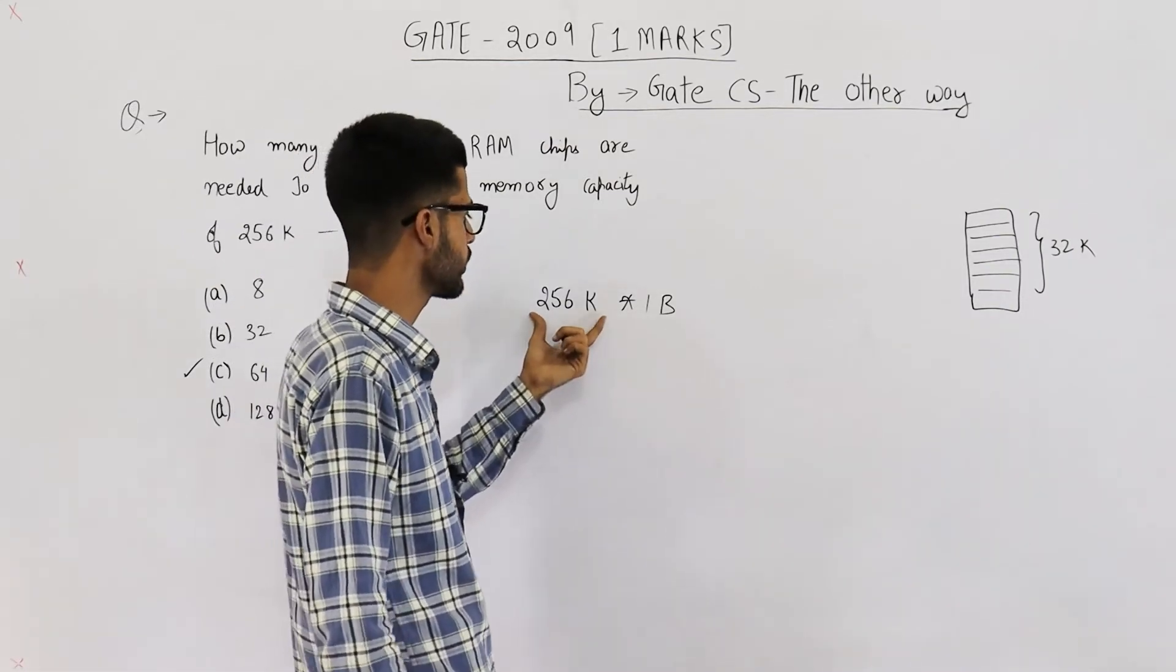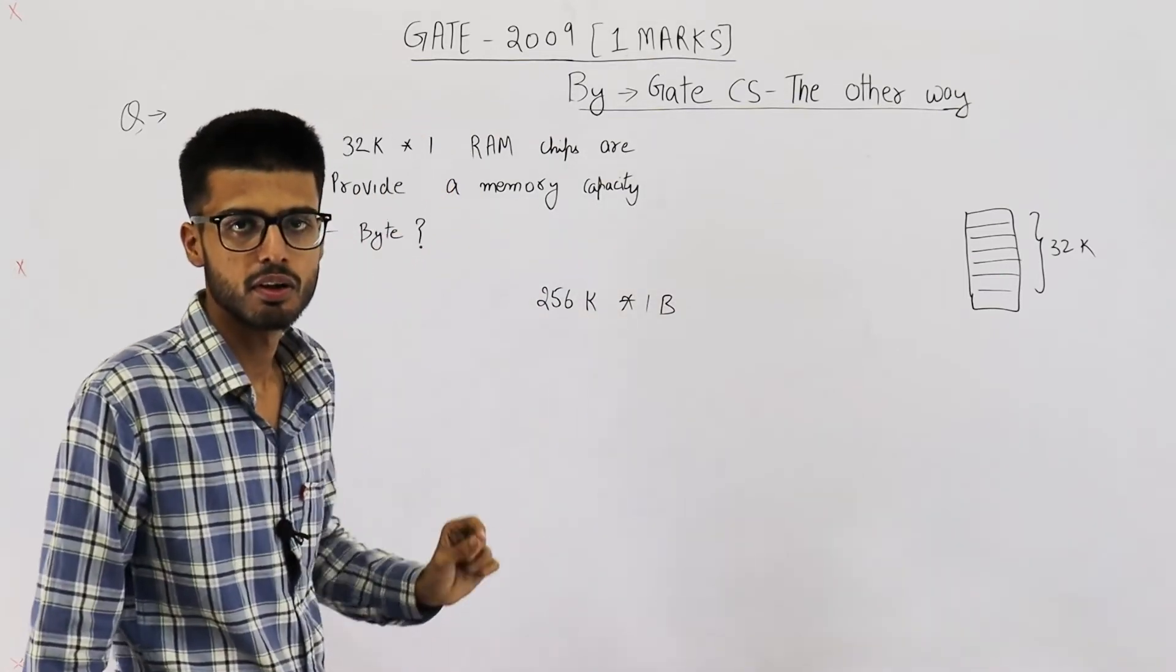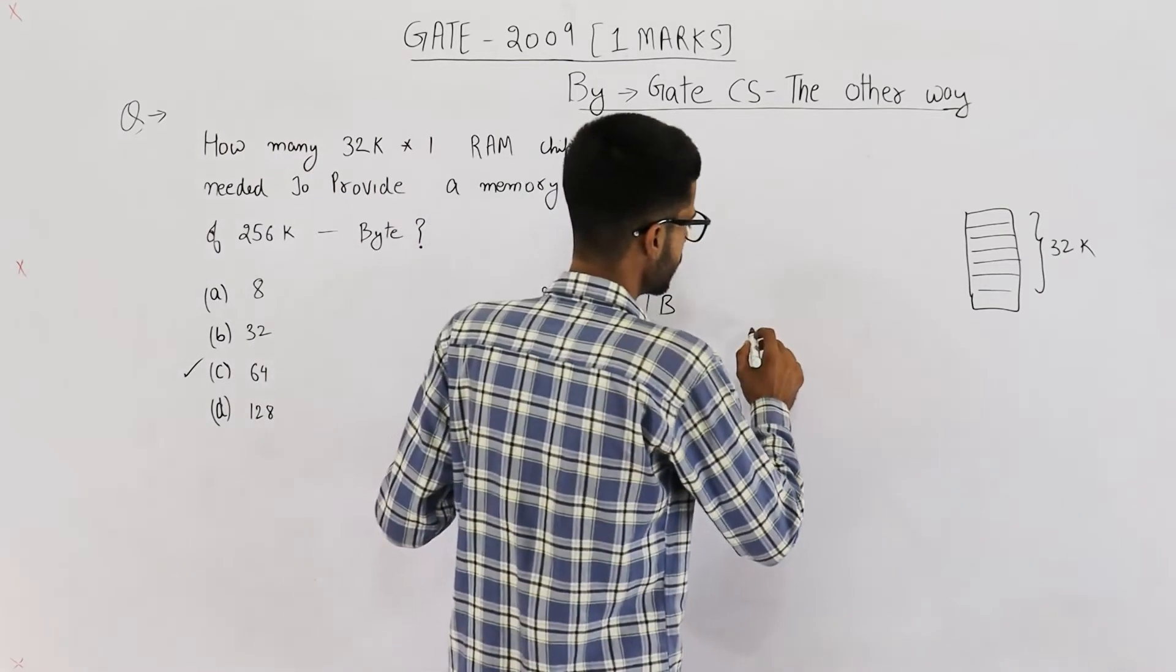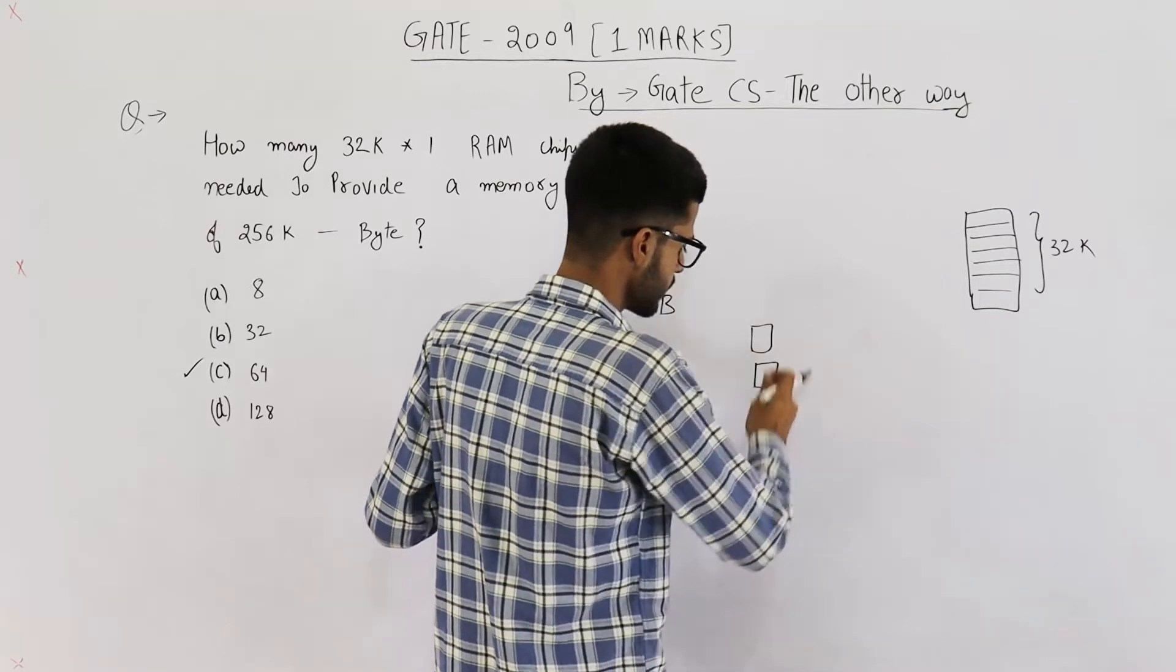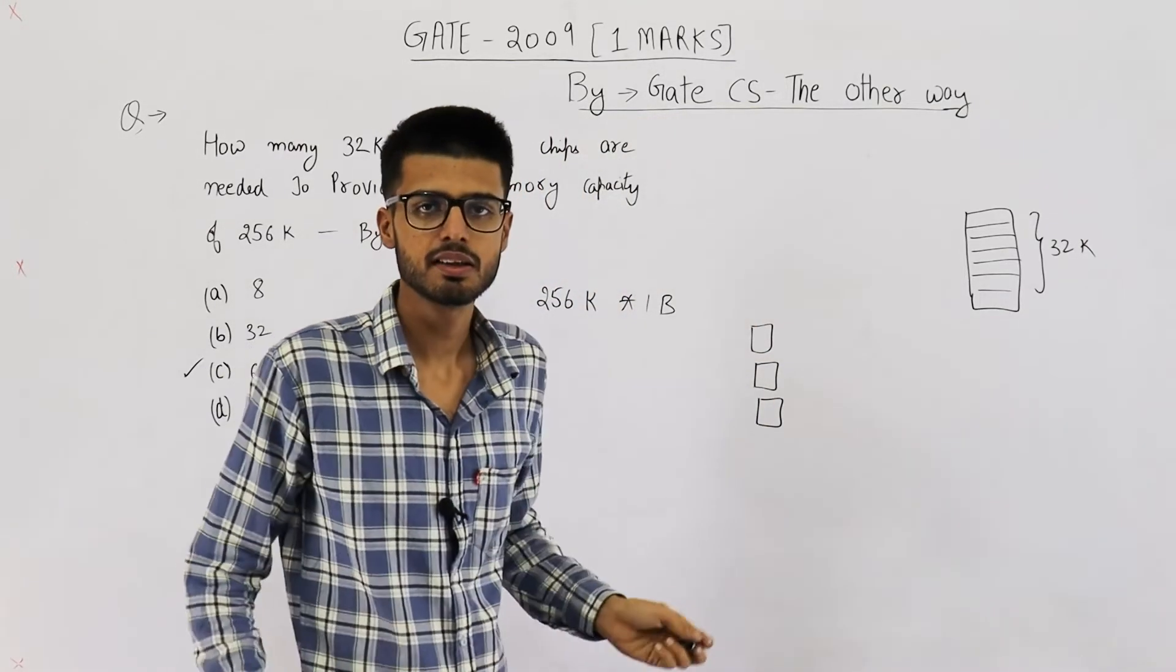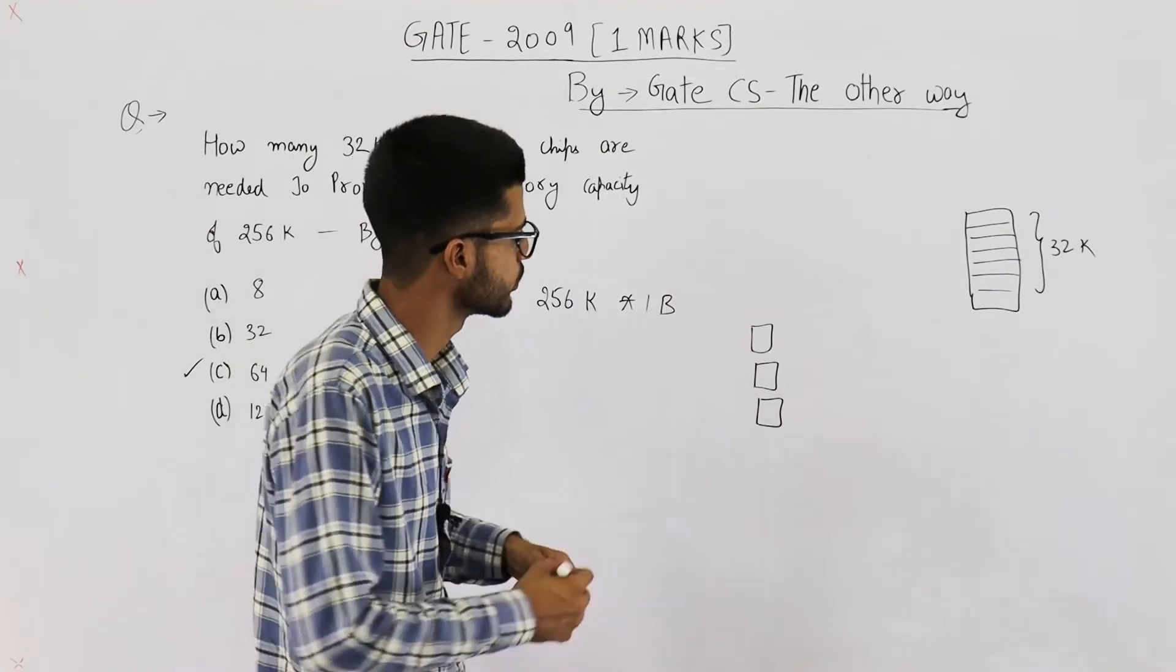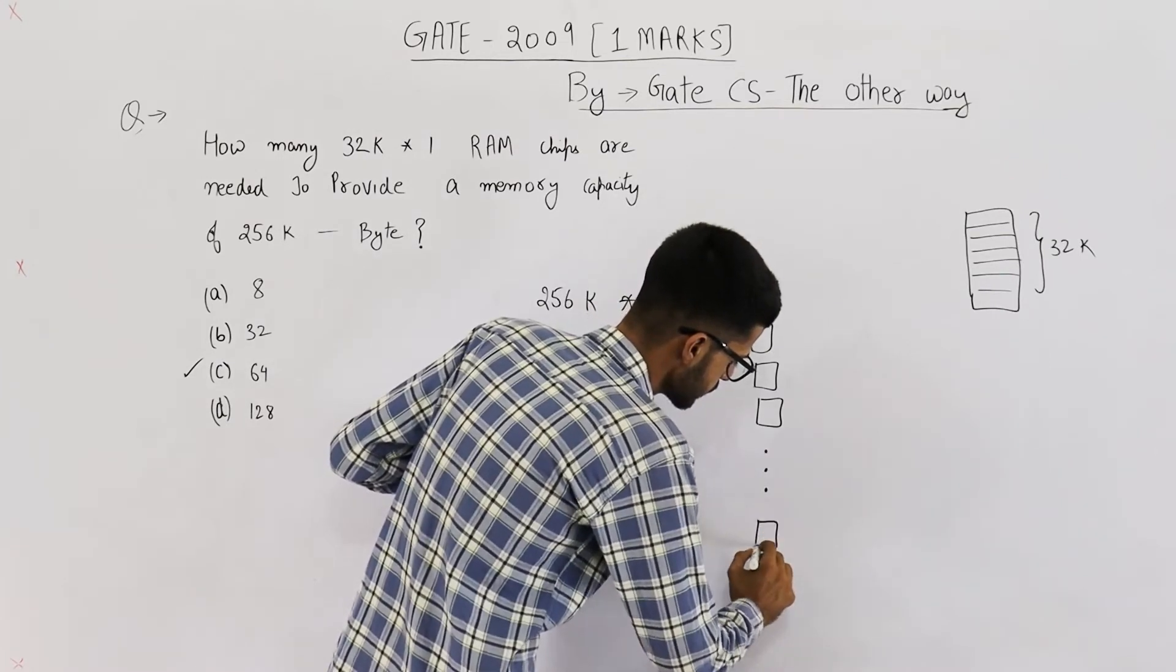So we need a total of 256k locations. One chip has 32k locations. So it's very obvious that we will place 8 chips this side. That means the matrix of chips that we will construct will have 8 rows, so on till 8.